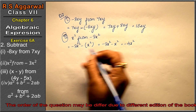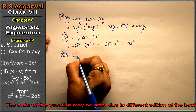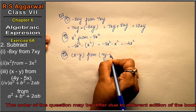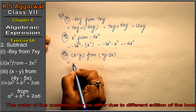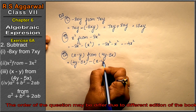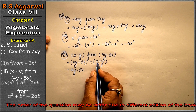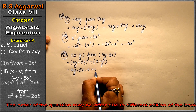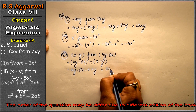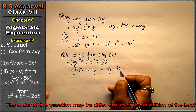Let's do the third part. Subtract (x - y) from (4y - 5x). The digit after 'from' is 4y - 5x, written first. Then we subtract, opening the bracket: minus plus minus x, minus minus plus y. So y terms: 4y + y = 5y, and x terms: both minus, so they add up to give -6x. Answer is 5y - 6x.